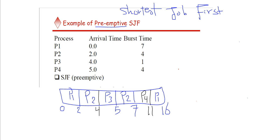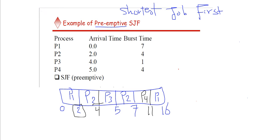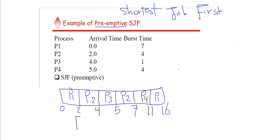Now let's put the finish times in a table. The finish time (F) for each process is: P1 = 16, P2 finishes first at 4... then P2's second run finishes at 7, P3 = 5, P4 = 11, and P1 = 16.